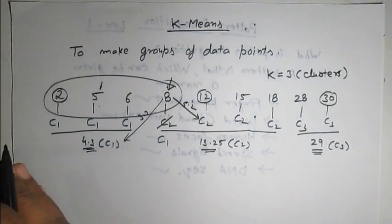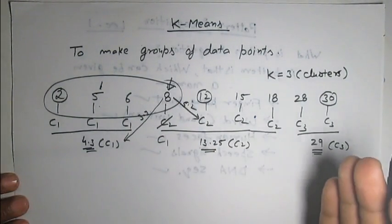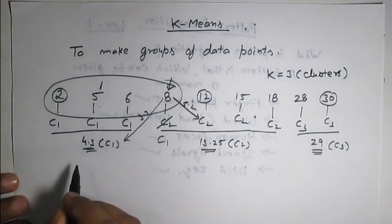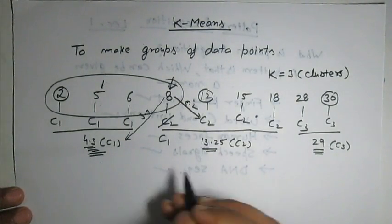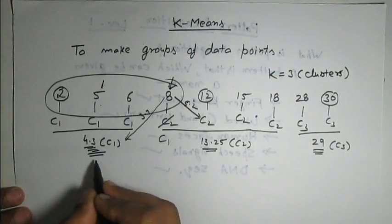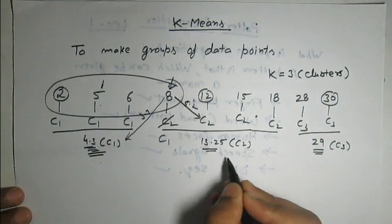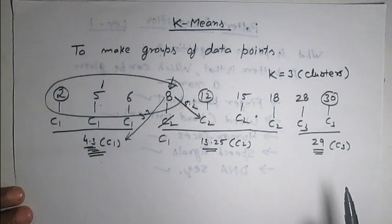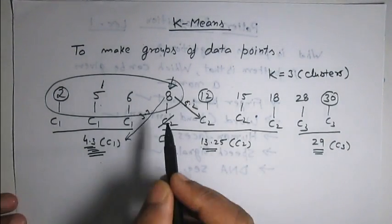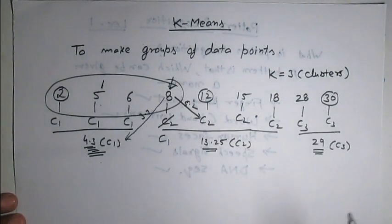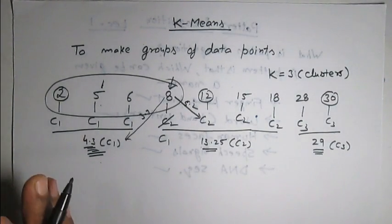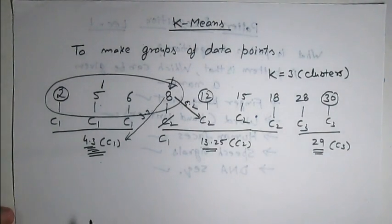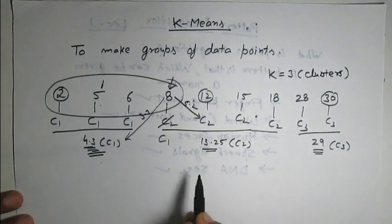After reassignment of cluster labels to each data point, we again have to calculate the mean. In each iteration the cluster centers may shift towards the right or towards the left, which will again change the membership of different data points. We will repeat this same process until we observe no more shifting in the cluster centers.